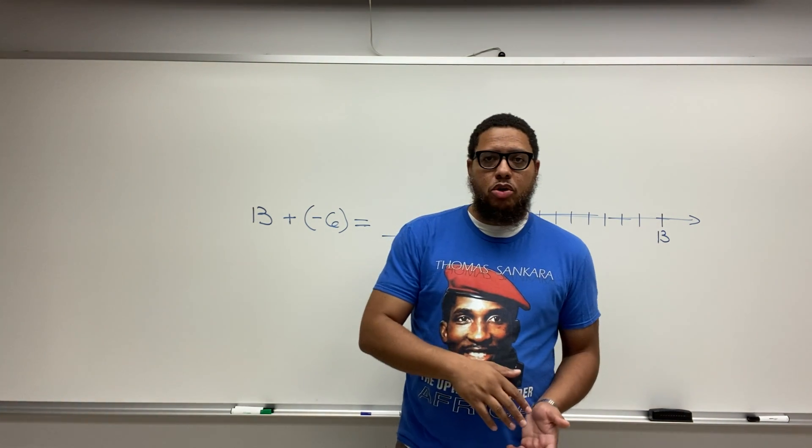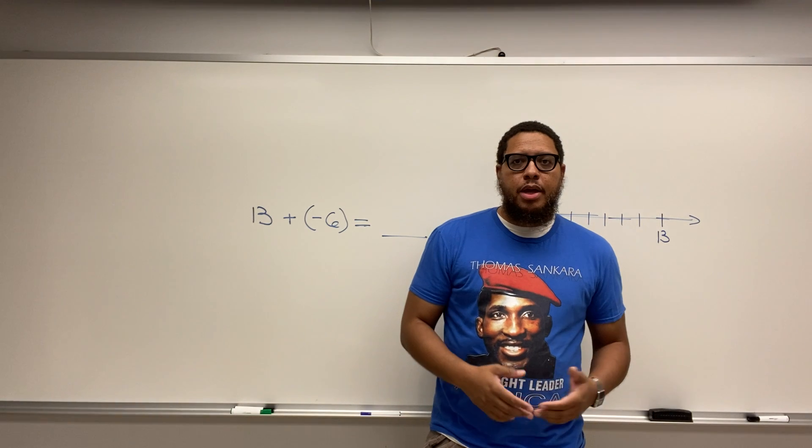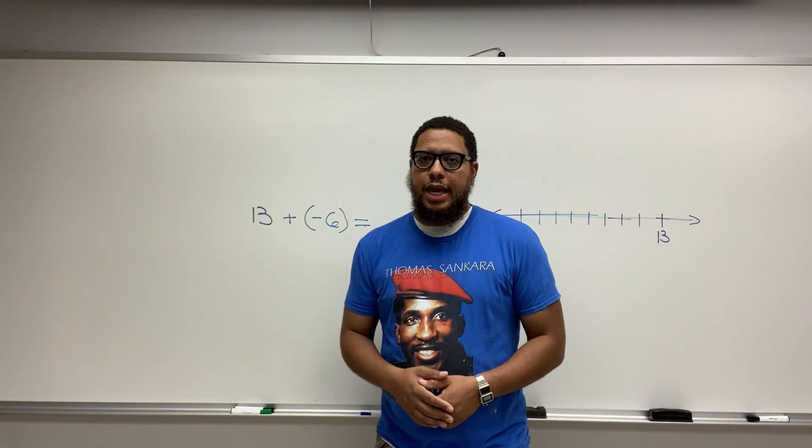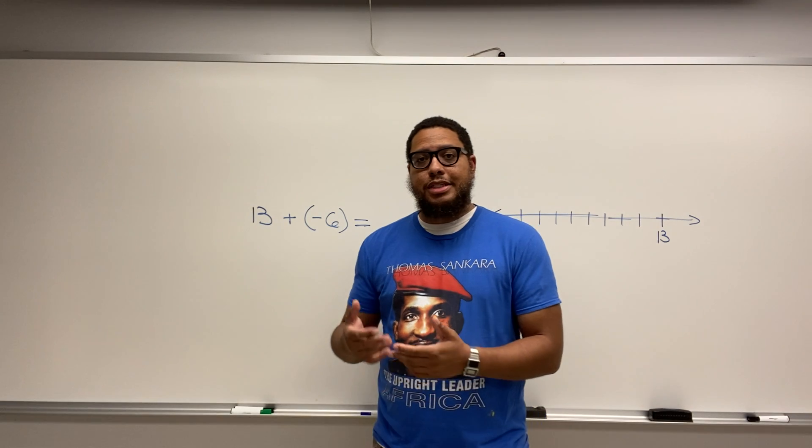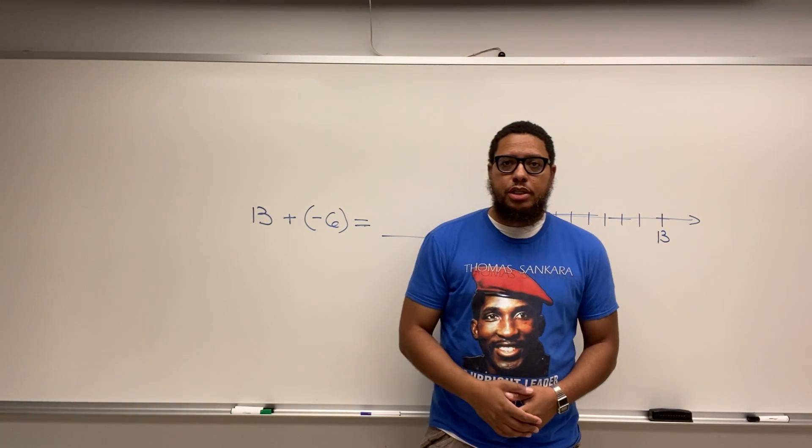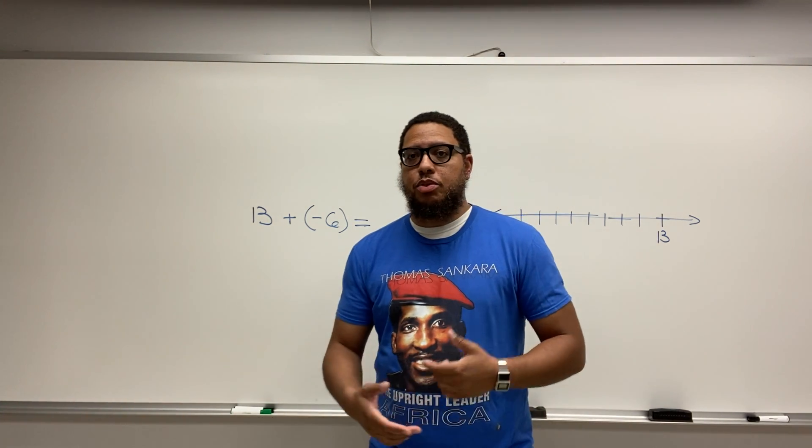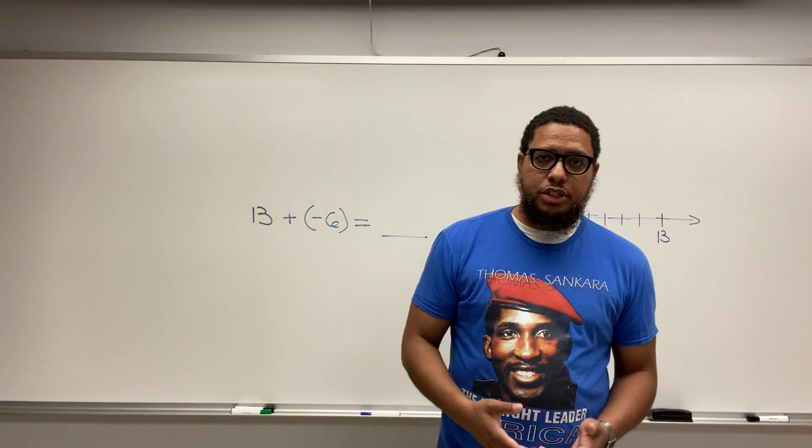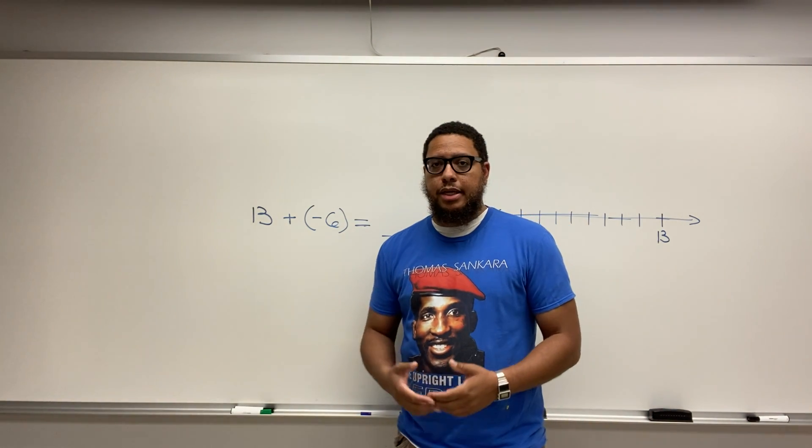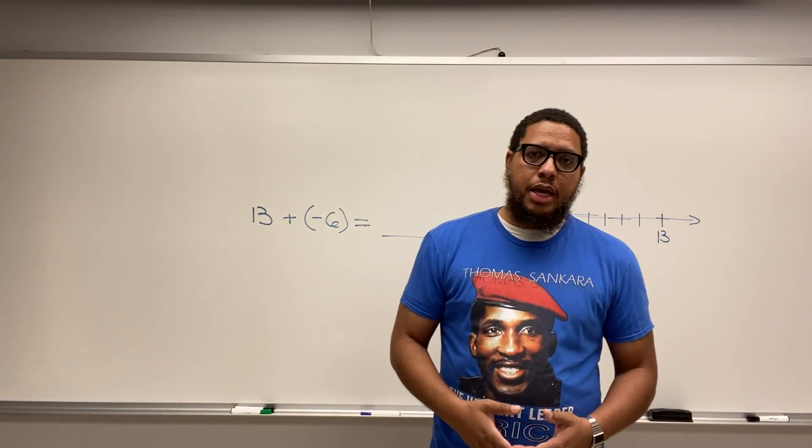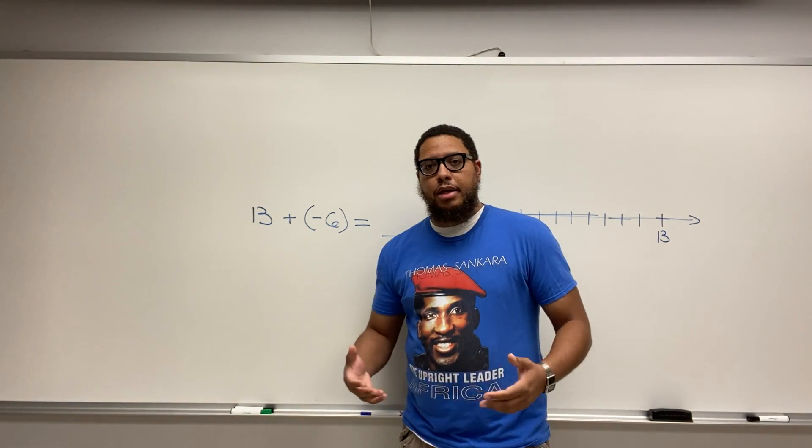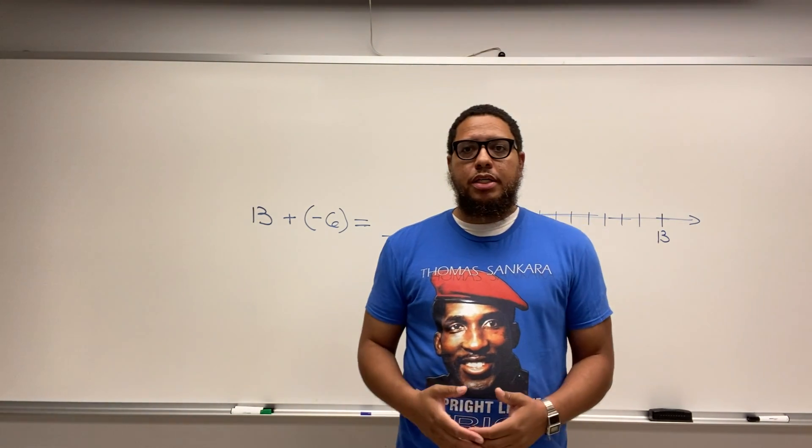Now, Thomas Sankara came along much later, right? He was a leader in the 1980s, early 1980s to the mid-1980s until he was assassinated by the French in 1987 because he was fighting against the French because the French had colonized that land and that nation. He believed in standing up and he was a Pan-Africanist leader and he believed in us.